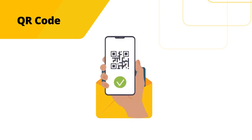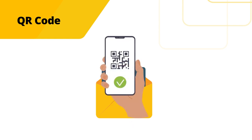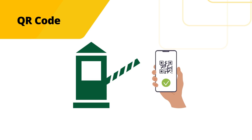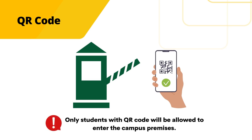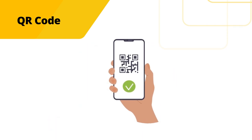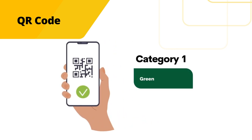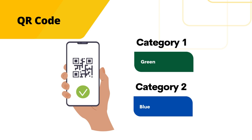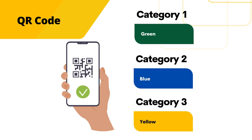The Crisis Management Committee, or CMC, will provide students with a QR code for each category or group, which will be scanned upon entering and exiting the campus. Only students with a QR code will be allowed to enter the campus premises. QR codes are color-coded to make them easier to identify: green for Category 1, blue for Category 2, and yellow for Category 3.